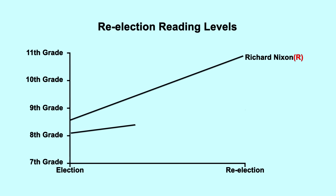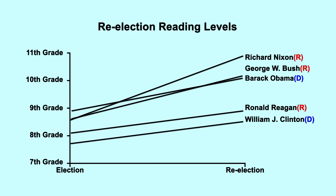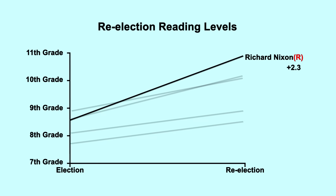What's also interesting is that most of these candidates also increased the reading level of their re-election speeches. Nixon, Reagan, Clinton, George W. Bush, and Obama all had increases in the reading level of their speeches, sometimes as much as two grade levels. And these re-election statistics are true across all parties.